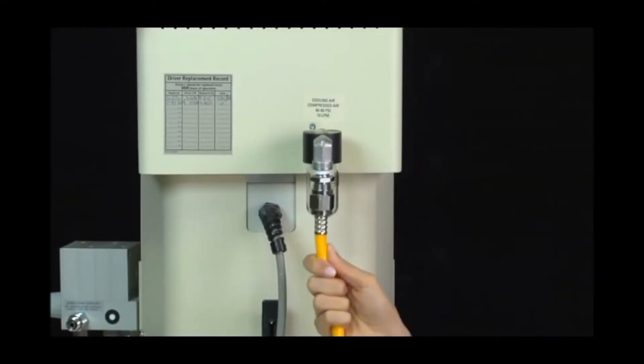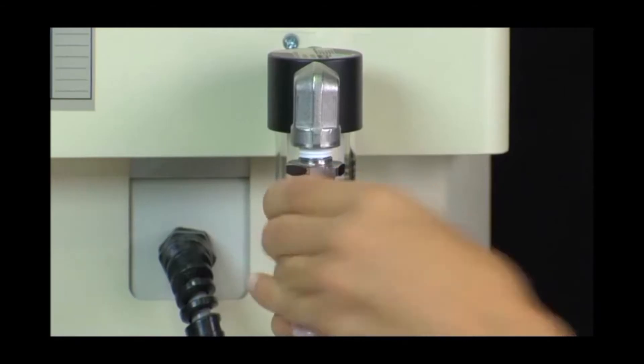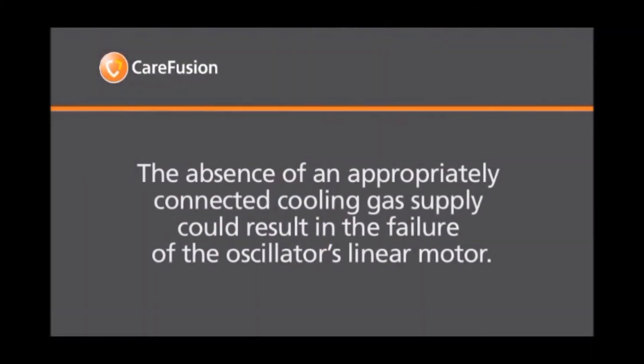A second DISS connection is labeled cooling air. This connection accepts a 50 psi compressed air supply, which cools the oscillator. It's important to note that the absence of an appropriately connected cooling gas supply could result in the failure of the oscillator's linear motor.